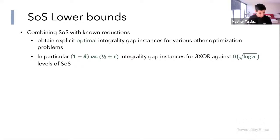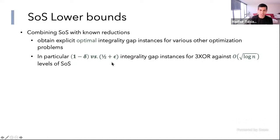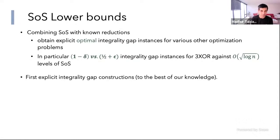A couple of comments about the result. The issue of 90% versus 51% soundness can be partially handled. Combining with known reductions inside the SOS hierarchy, one can show there are explicit instances where no assignment satisfies more than half plus epsilon fraction, and SOS thinks almost all constraints are satisfiable. You can also obtain gaps for explicit instances of many other problems using reductions. To the best of our knowledge, this is the first explicit integrality gap construction. There are also things called Tseitin tautologies, which are unsatisfiable XOR systems where SOS thinks they're satisfiable, but they are almost satisfiable — there's no gap between soundness and completeness.